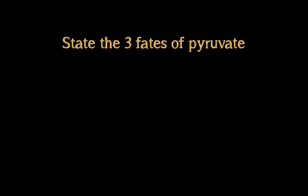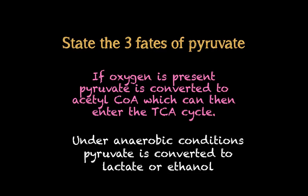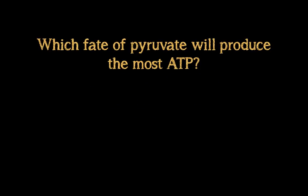You should start writing now. To state the three fates of pyruvate, first figure out whether oxygen is present or not. If oxygen is present, pyruvate is converted to acetyl-CoA, which can then enter the TCA cycle. When oxygen is not present — under anaerobic conditions — pyruvate will be either converted to lactate or ethanol.